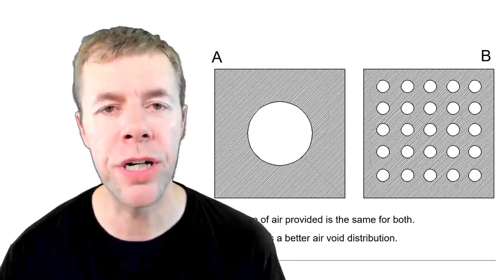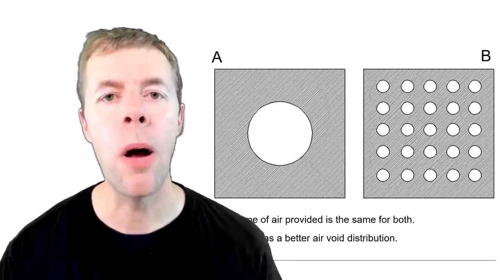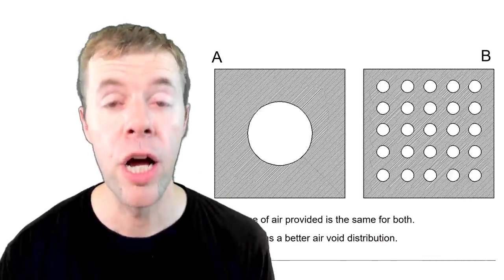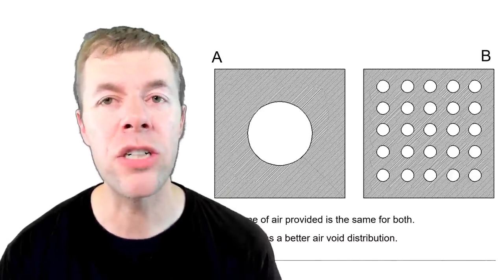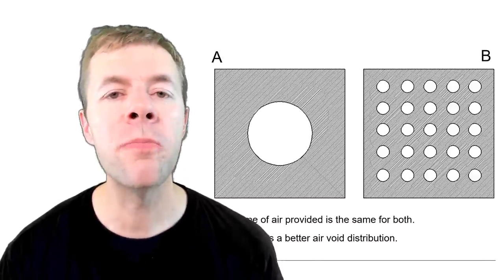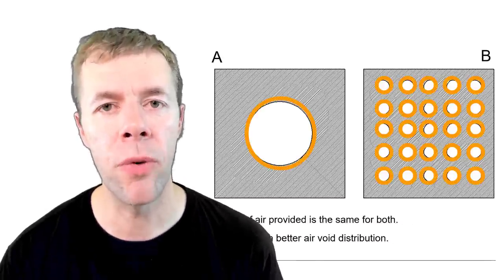We've got two air void systems here, one on the left one on the right. Both of them have the same volume of air, but as a concrete person we'd much rather have the one on the right, just because of that same reason I showed you earlier in that picture. There's much more protection out of the air void system on the right.